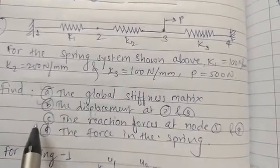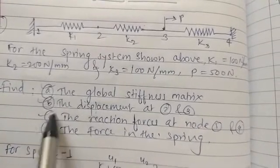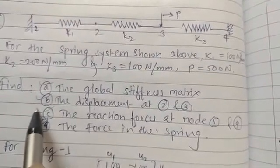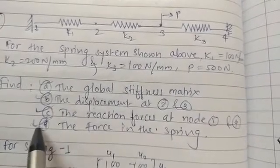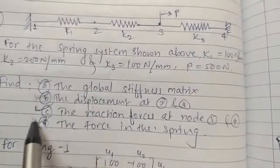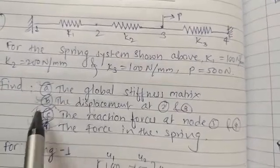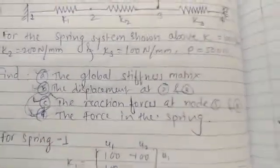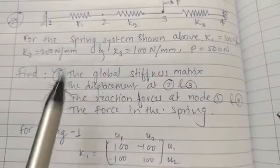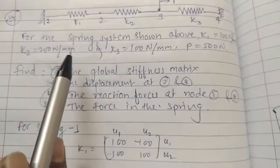We will solve for the displacements and global stiffness matrix first. The remaining quantities — reaction forces and spring forces — are straightforward once those are found, so those are left for self-study. Now let's begin the analysis of the spring system. First of all, we need to find the stiffness coefficient for every element.